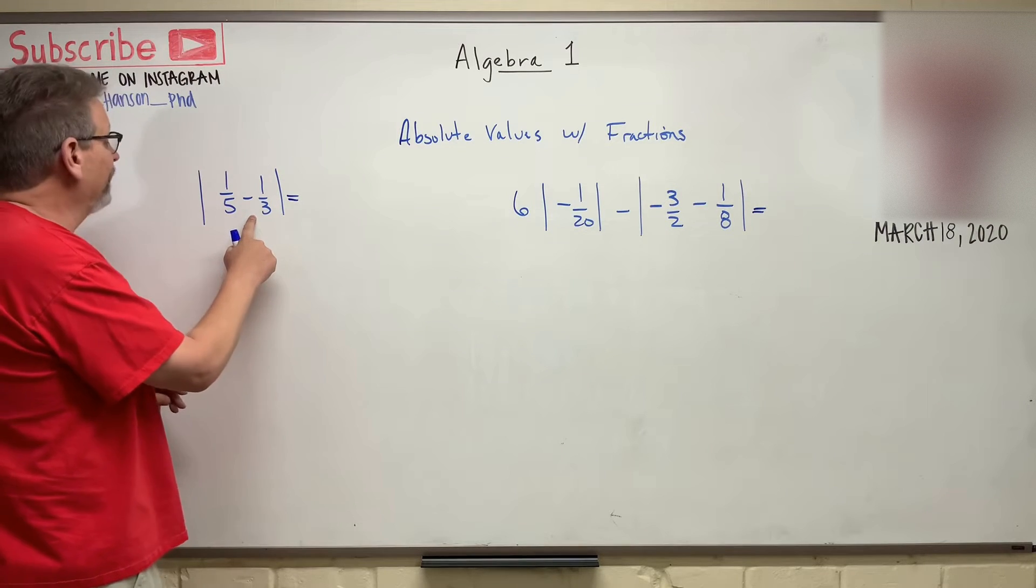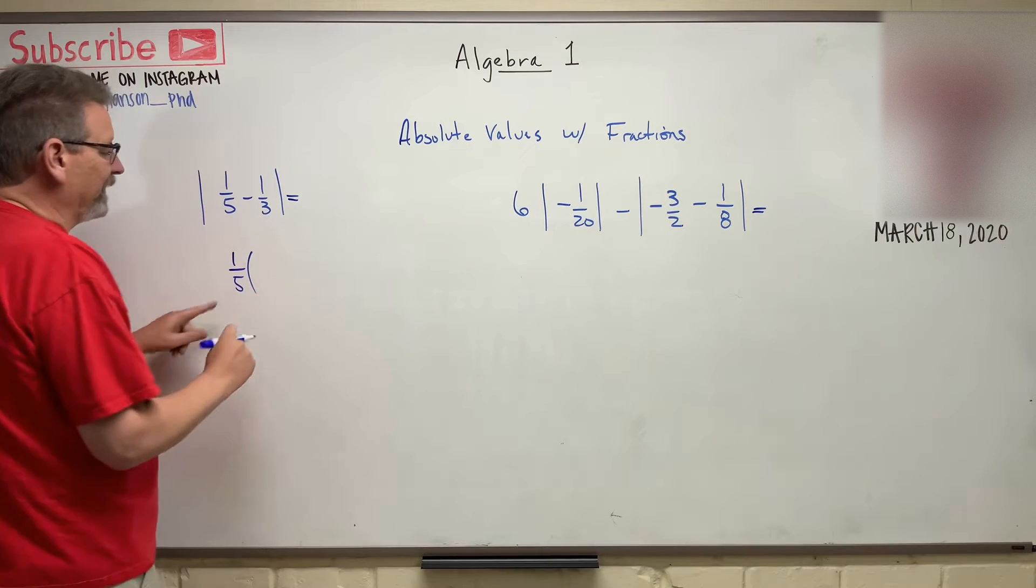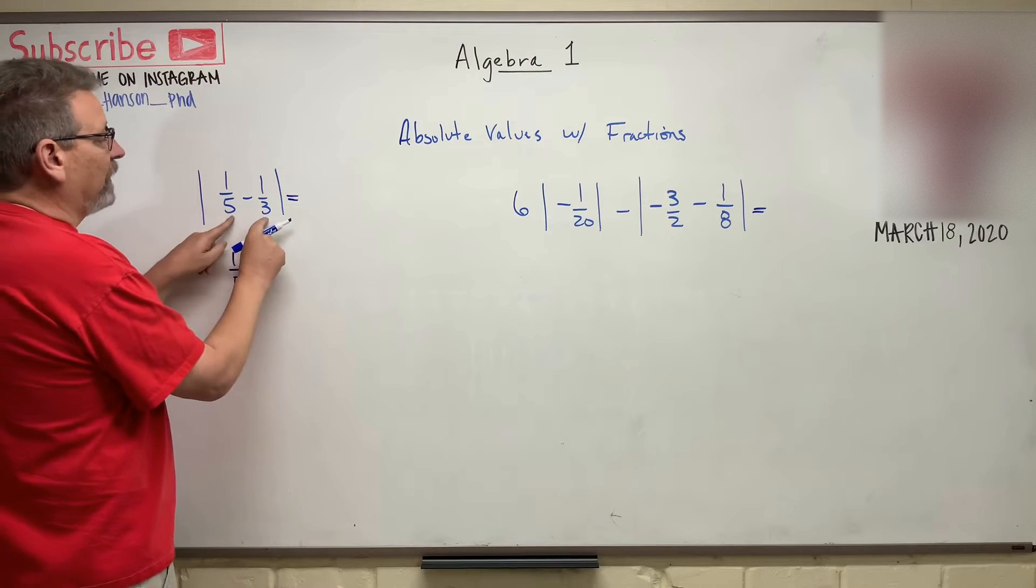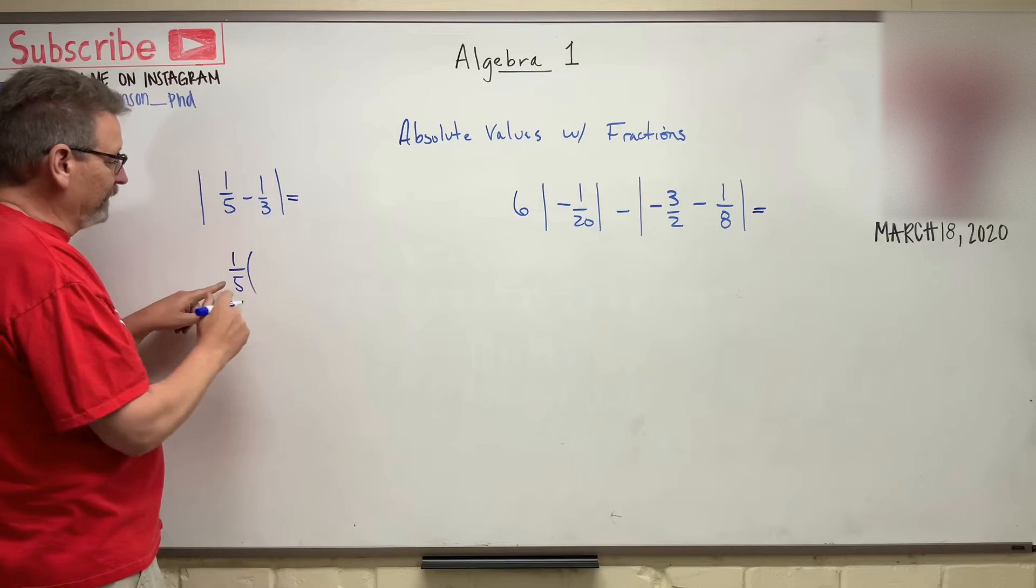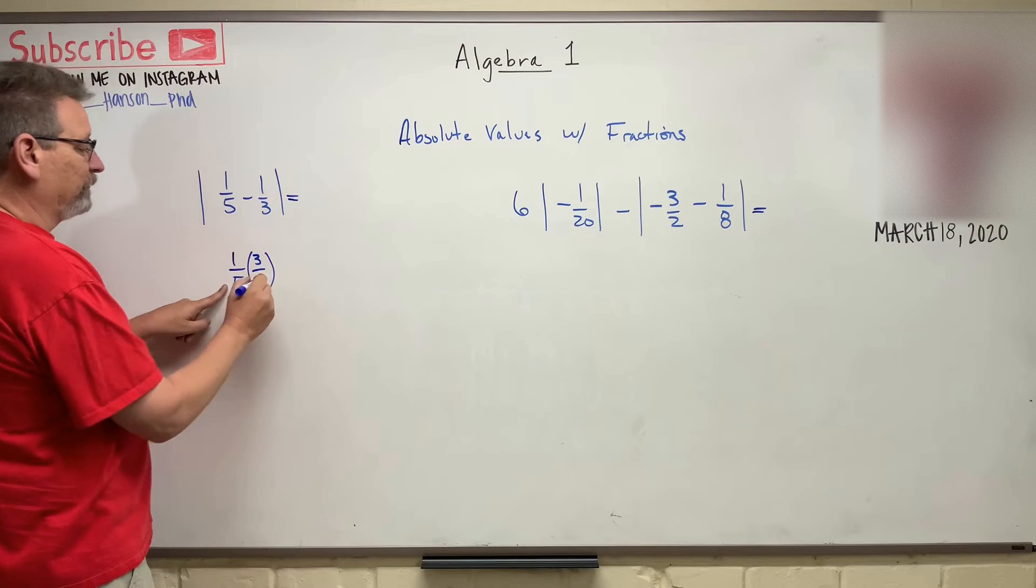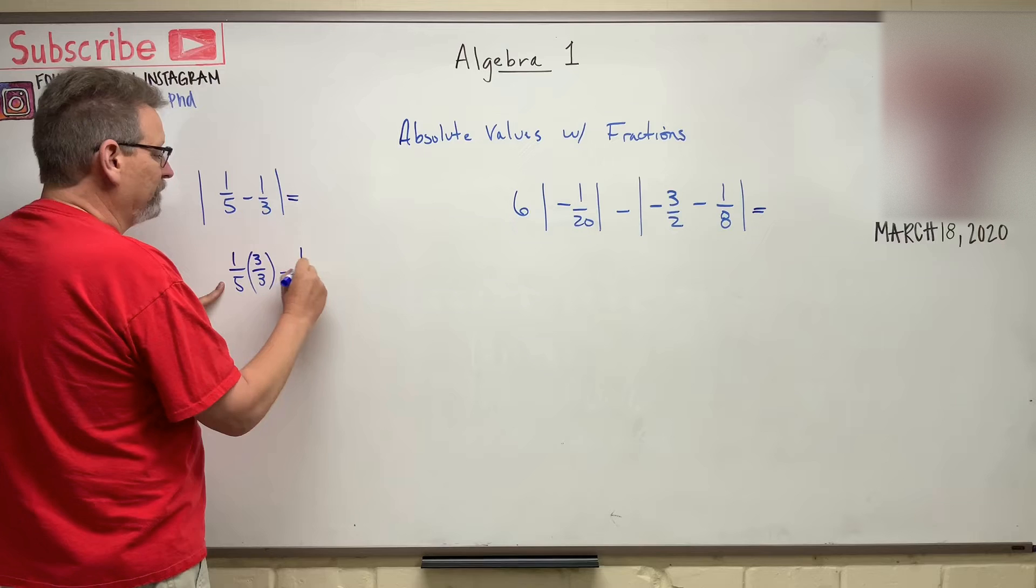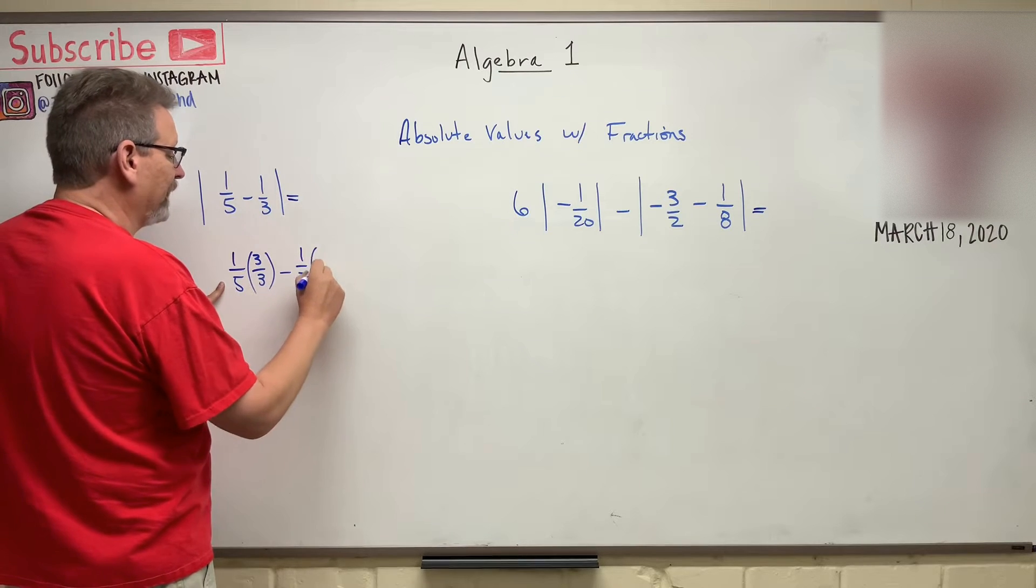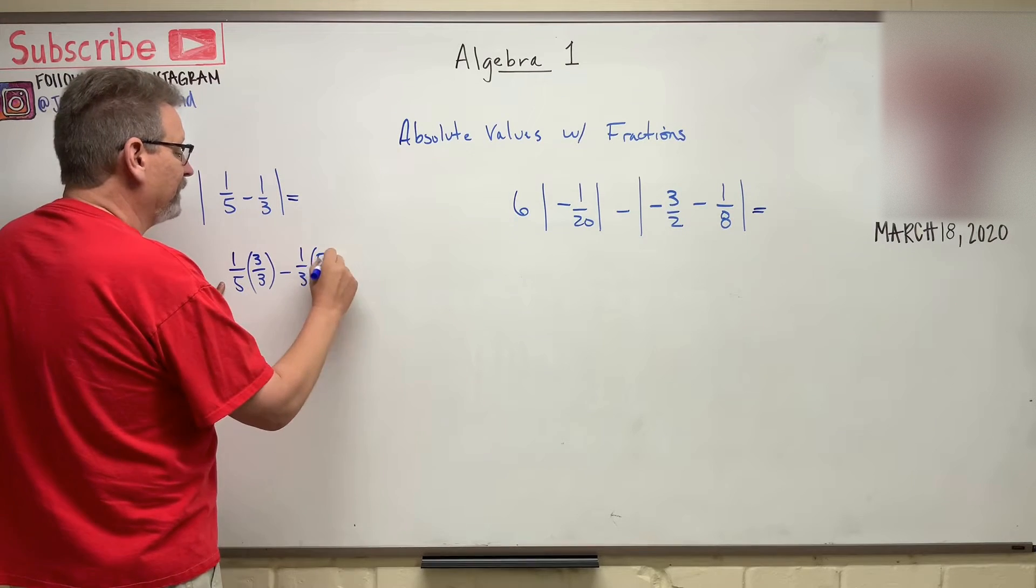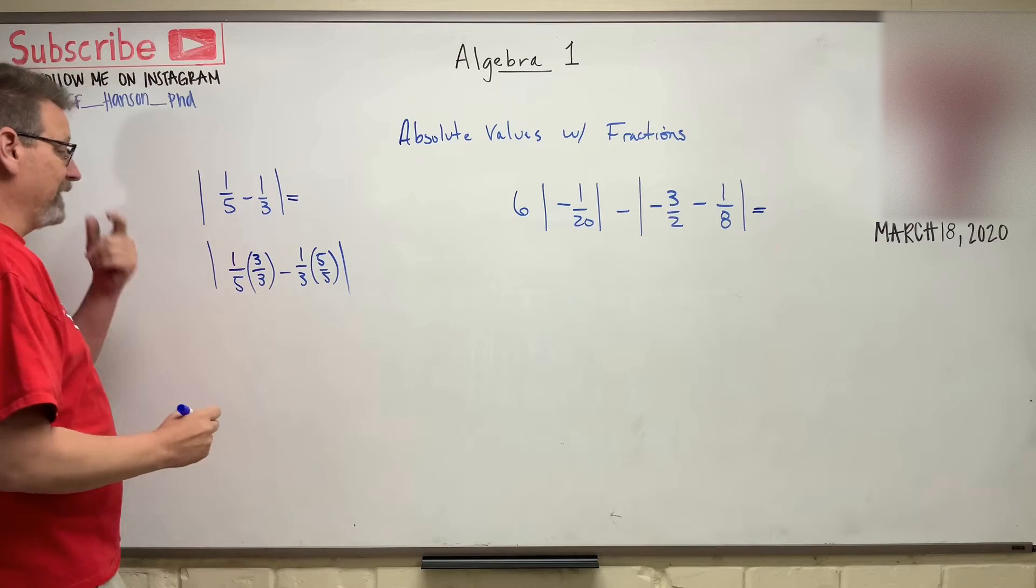So 1 over 5, what are we going to multiply that by? What's the least common multiple for 5 and 3? It's 15. So I've got to get this guy by 3 to get him to 15. 5 times 3 is 15 minus, I got to get that guy to 15 and he's going to be multiplied by 5 over 5. Then I'll take the absolute value of whatever that is.